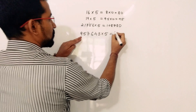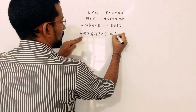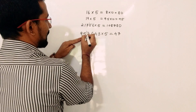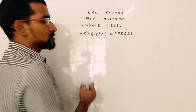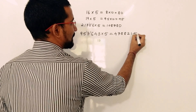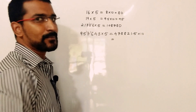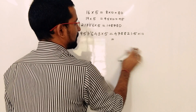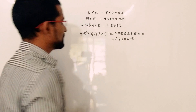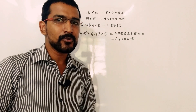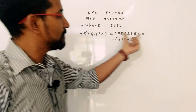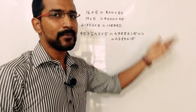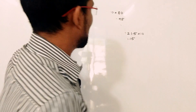Dividing 957,643 by 2: 9 divided by 2 is 4 remainder 1, carry it; continuing digit by digit with carries. Since 3 is odd, we get a decimal — the result is 478,821.5. Multiply by 10: the decimal shifts one place right, giving 4,788,215. So this is how we can multiply any number by 5 — divide by 2 then multiply the result by 10.